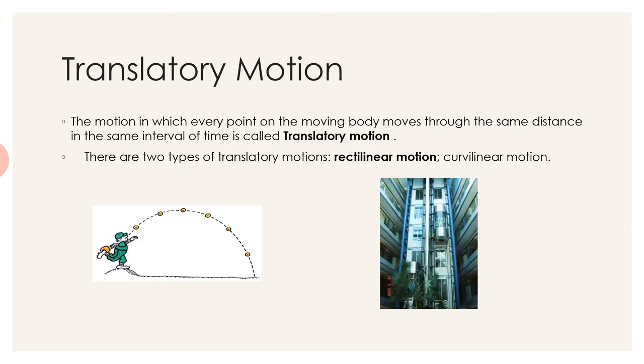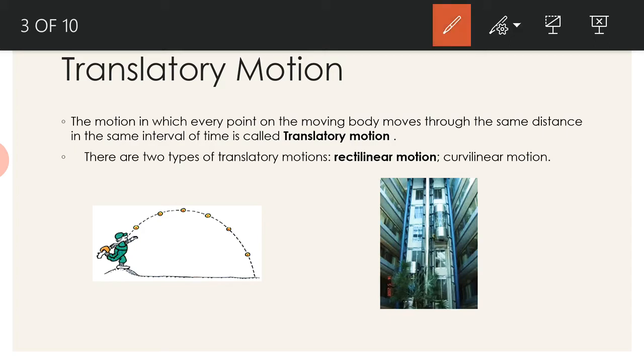Translatory motion is a motion in which all the points in a body cover the same distance through the same interval of time. For example, a car moving along a straight path or a curved path also. The translatory motion is of two types: rectilinear motion and curvilinear motion.